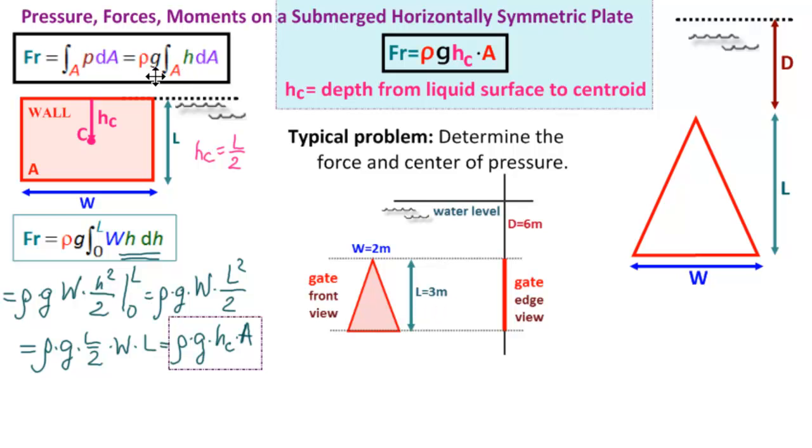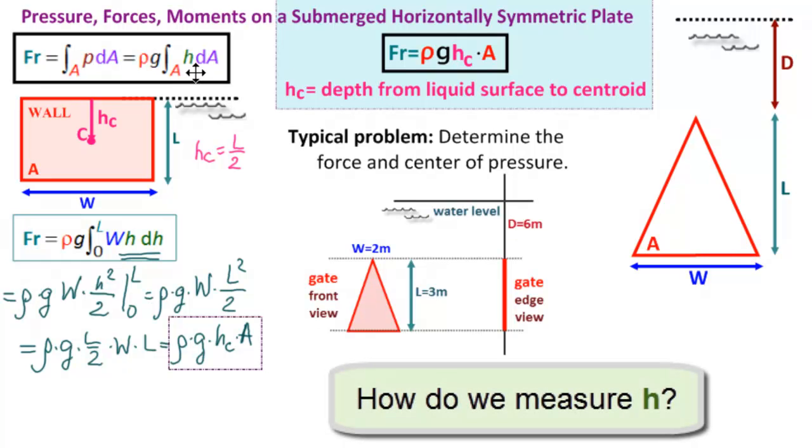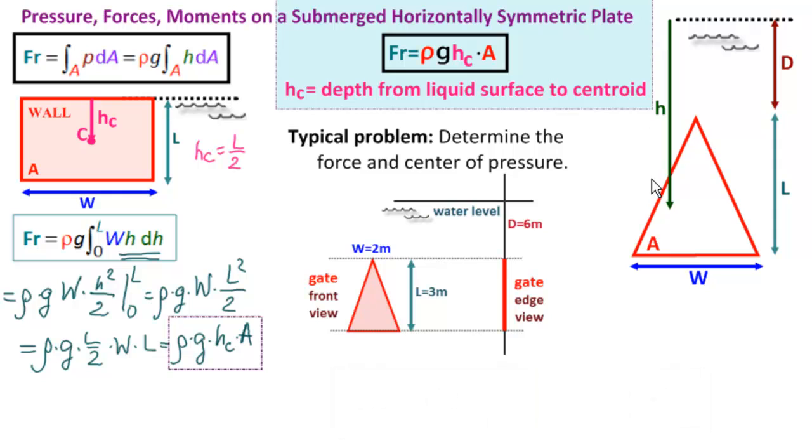We have rho, because we know it's water here. We have G. We need to integrate over A. A is triangular gate. We need H. Where do we measure H from? H is always measured from the liquid surface. So H is coming down from up here. This is H all the way from the liquid surface down. And then we need DA.